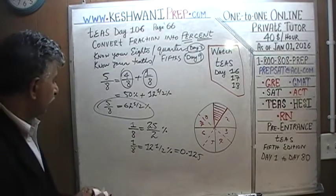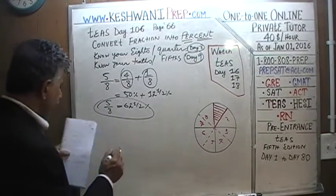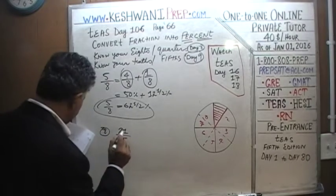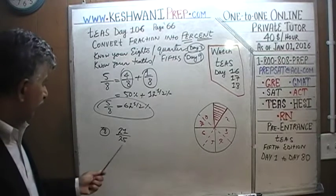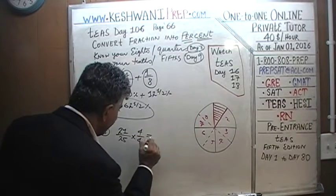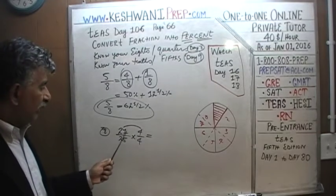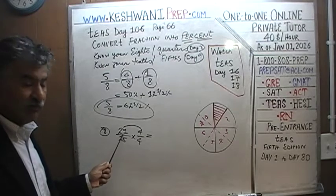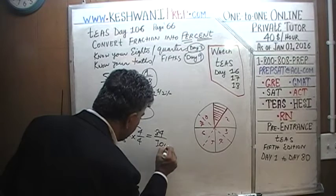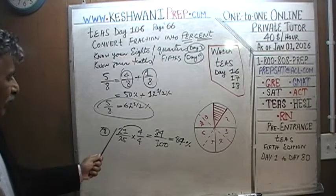Number eight: what is 21 twenty-fifths in terms of percentage? We have 25 at the bottom and we want 100. Multiply top and bottom by 4. I know 20 times 4 is 80, and we need one more 4, so 21 times 4 is 84. Eighty-four over one hundred, which is exactly 84% — not an approximation, the exact value.